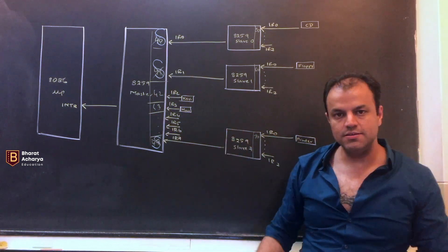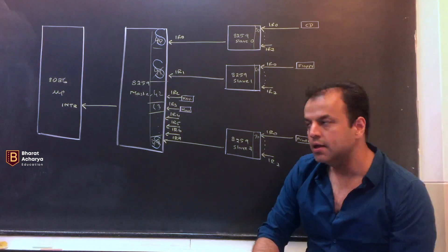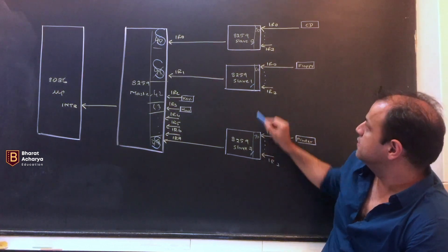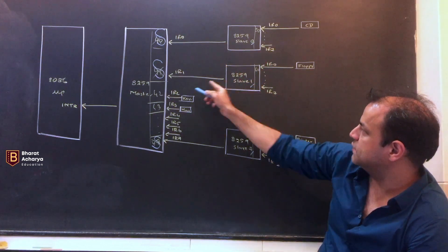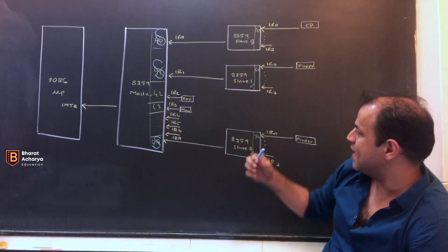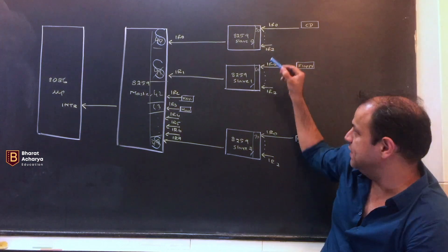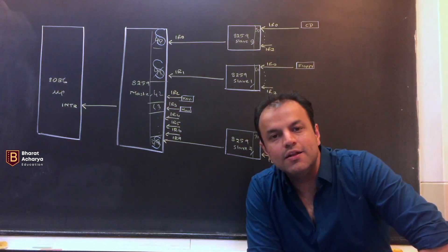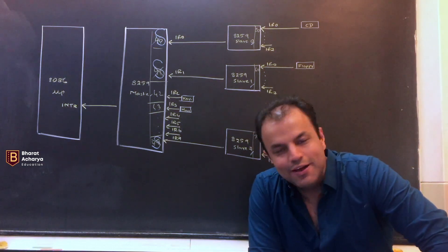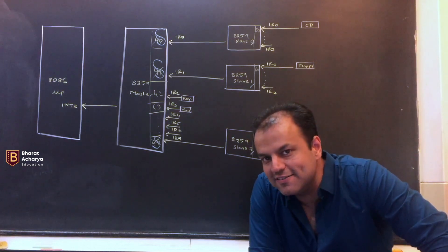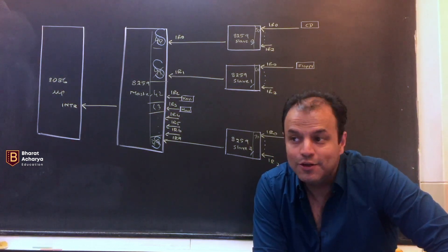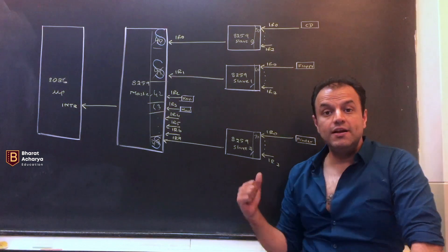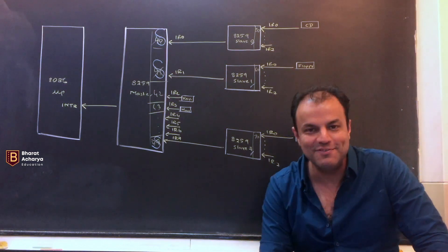Just like we have told the master on which lines there are slaves, similarly we have to tell every slave on which line it is connected to the master. This slave is connected on IR-0, this one on IR-1, and this one on IR-7. So this is called slave number 0, slave number 1, and slave number 7. This is called the slave identification number. If you don't give the slave this number, it will not recognize itself. It's like you with a seat number in a class - without that, you lose your identity.